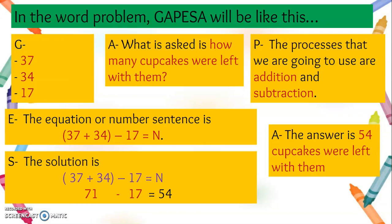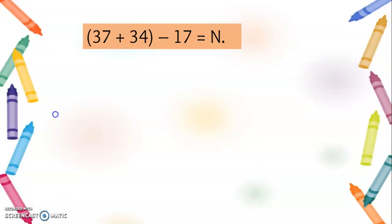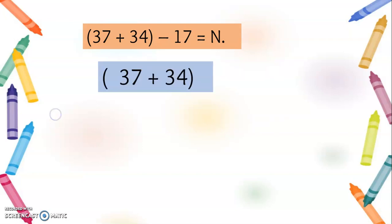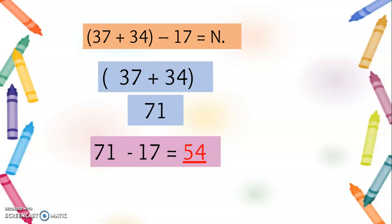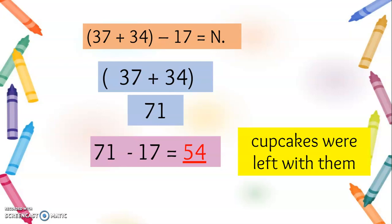The answer is 54 cupcakes were left with them. So again: (37 + 34) − 17 = N. 37 plus 34 equals 71, and 71 minus 17 equals 54. And 54 cupcakes were left with them.